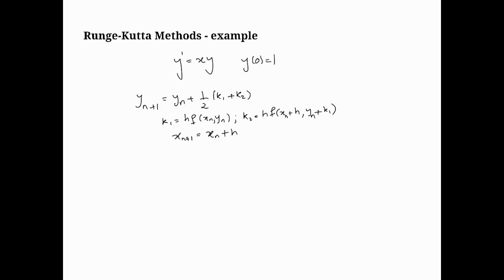So here's the method just written for you as a quick summary. yn plus 1 is equal to yn plus half k1 plus k2, and we have k1 is equal to h f of xn and yn, and then the right-hand side of the equation xn plus h, yn plus k1.